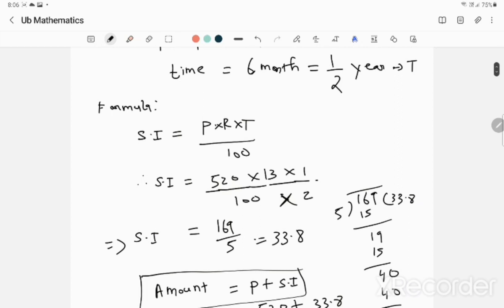So if we cancel 100 and 2, we get 520 times 13 times 1 over 200. Then 520 by 20 is 26. Then 26 by 2 is 13. So 13 into 13 becomes 169, and 5 remains in the denominator.